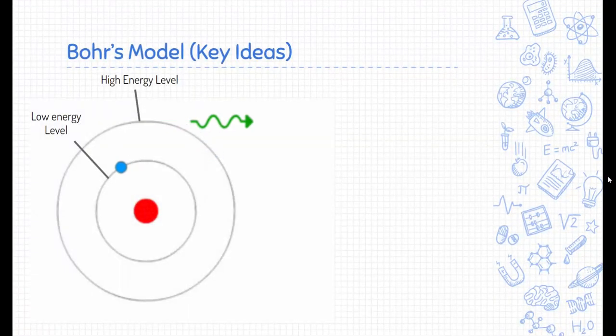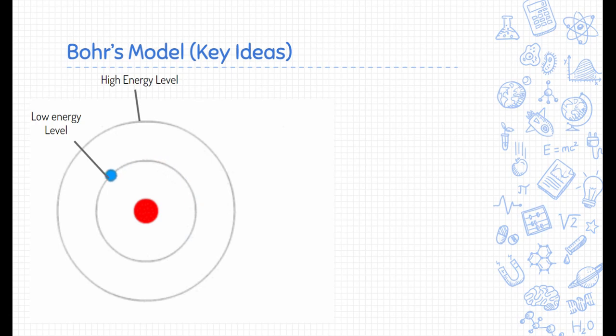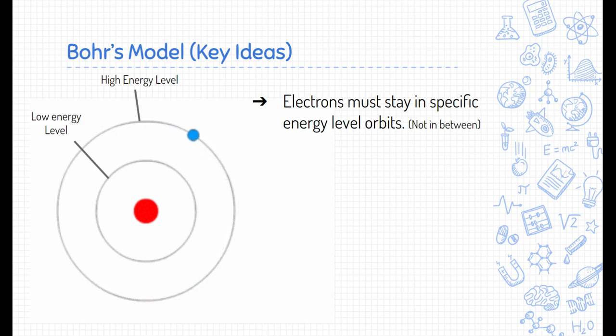Bohr had a better model. Through a series of math and other research, he was able to figure out these key ideas. The first being that electrons have to stay in specific energy level orbits. He even said that electrons couldn't exist anywhere between those orbits like maybe a planet would, but they have to exist on specific orbits.